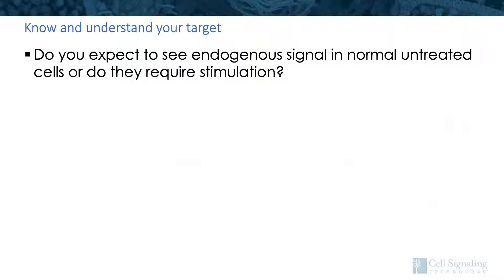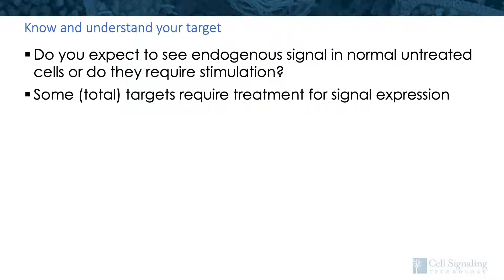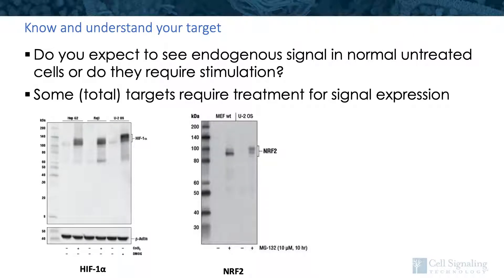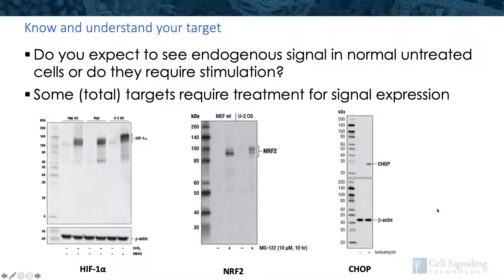In some instances, for endogenous or total protein detection, you may have to dig a bit further. Due to the nature of the targets themselves, some proteins require treatment for signal expression. For example, HIF1-alpha is a transcription factor that plays a critical role in cellular response to hypoxia — untreated cells may not be subject to hypoxic conditions, so treatment is required to induce hypoxia for detection. NRF2 is another transcription factor in the response to oxidative stress; the addition of MG132 prevents proteasomal degradation, otherwise NRF2 activity may go undetected. Similarly, CHOP is a multifunctional transcription factor in ER stress response, so stress is needed to detect signal.